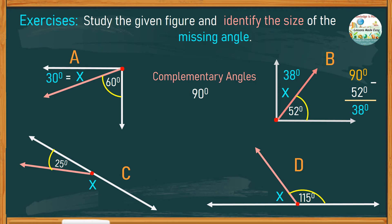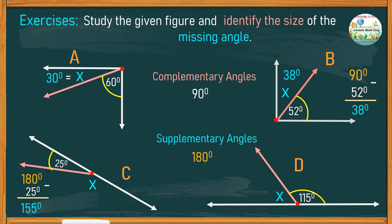Figure C shows supplementary angles. Together, they make a straight angle with a measurement of 180 degrees. So, if one of the angles is 25 degrees, subtracted from 180, the other angle would be 155 degrees. For figure D, again, these are supplementary angles with a total of 180. So we subtract the given 115 degrees and we still have 65 degrees left. Therefore, the measurement of angle X is 65 degrees.